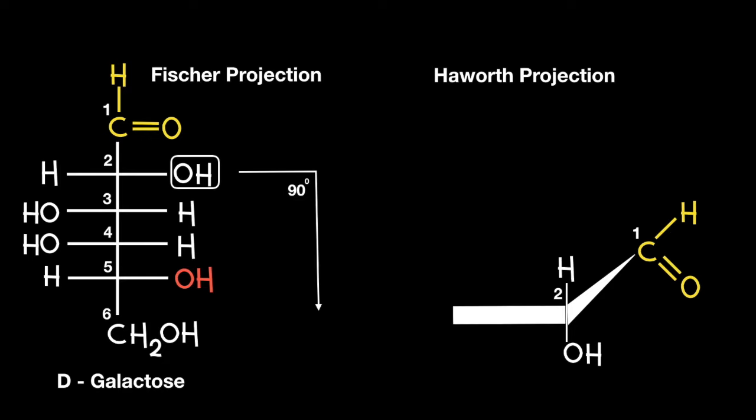Moving on now to carbon number 3. If we look at the Fischer projection we can see that the OH group is pointing to the left, which means in the Haworth projection it will be facing up with its corresponding hydrogen facing down.